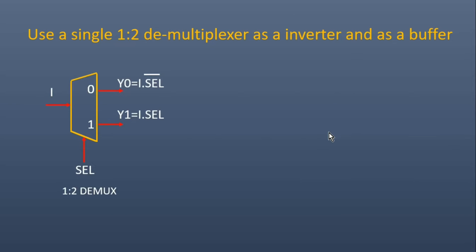This is the pin diagram of the demultiplexer. This is the select line, the input I, and it has two outputs: Y0 and Y1.